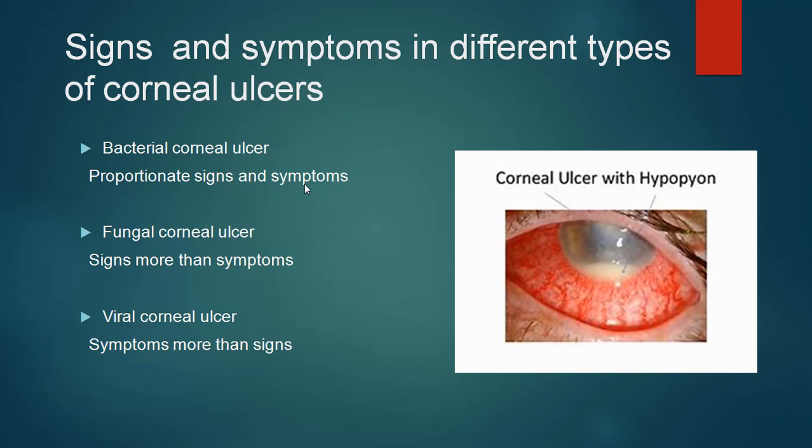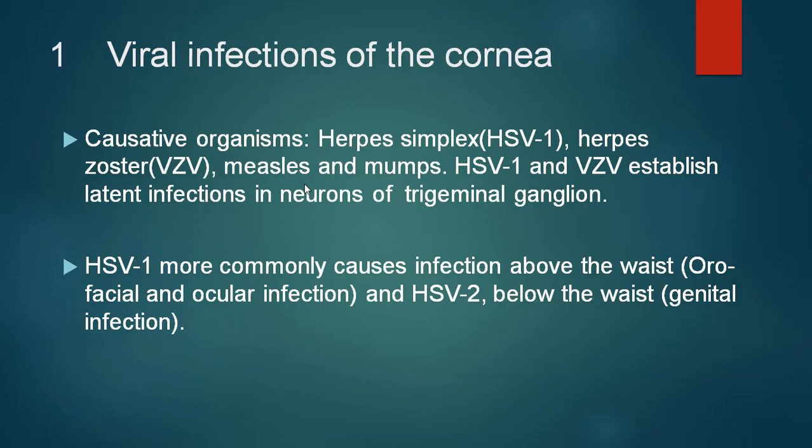Since we are going to talk of viral corneal ulcer today, I want to tell you that the symptoms are much more than signs. The causative organisms for viral infections could be herpes simplex, herpes zoster, and rarely measles and mumps. The herpes simplex virus and the varicella zoster virus establish in the neurons of the trigeminal ganglion. HSV1 affects above the waist while HSV2 affects below the waist.